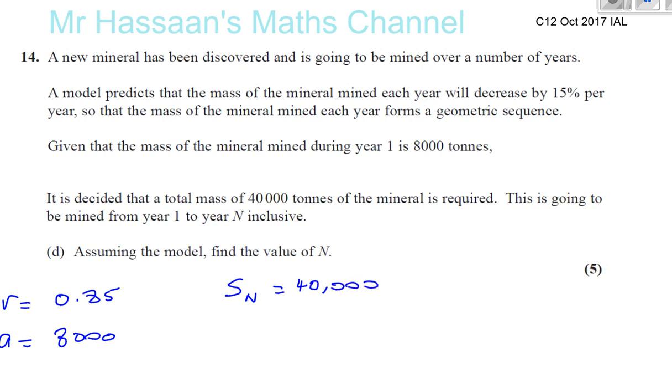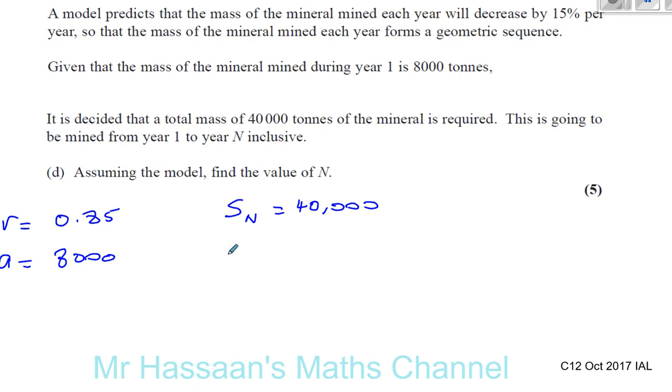We can use our formula. The formula sheet tells us the sum of the first N terms of a geometric sequence is given by A times (1 minus R to the power of N) over (1 minus R). This is better to use when the magnitude of the common ratio is less than 1, so we're going to use this particular form.